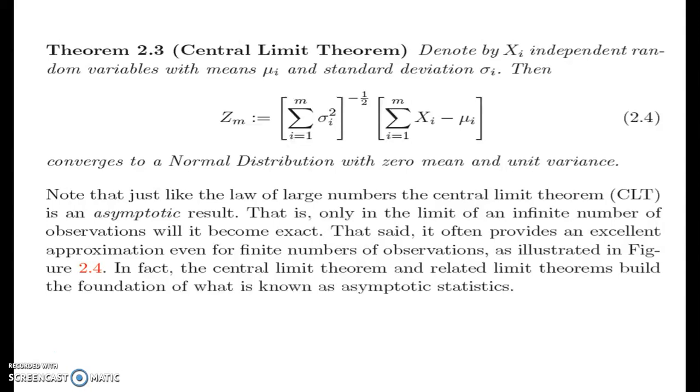Here the theorem central limit theorem says that we have denoted by Xi independent random variables with means μi and standard deviations σi. Then we have zm equals sigma i equals 1 to m sigma i squared to the power of minus 1/2 times sigma i equals 1 to m (Xi minus μi) converges to a normal distribution with zero mean and unit variance. Note that just like the law of large numbers the central limit theorem is an asymptotic result, that is only in the limit of an infinite number of observations will it become exact. That said, it often provides an excellent approximation even for a finite number of observations as illustrated in figure 2.4. In fact, the central limit theorem and the related limit theorems build the foundation of what is known as asymptotic statistics.